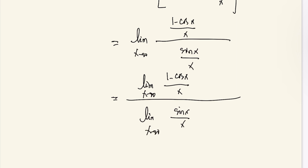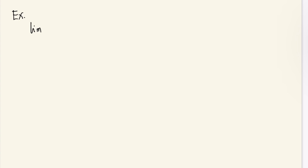We know that the first limit here is 0 from our theorem, and the second limit is 1. So the answer is 0. Let's try another example: find the limit of sine x cosine x minus sine x all over 3x squared as x approaches 0.